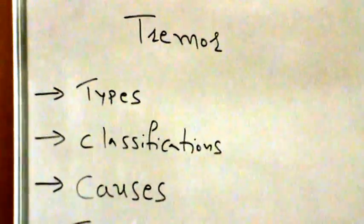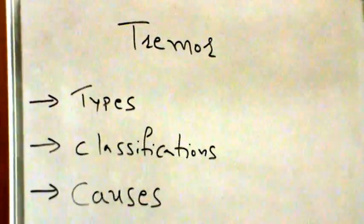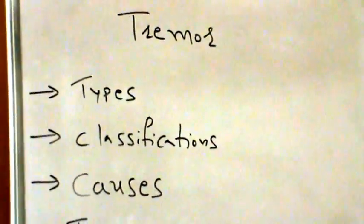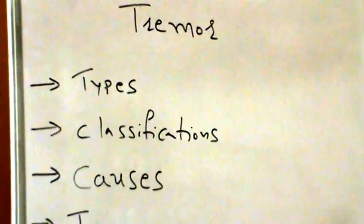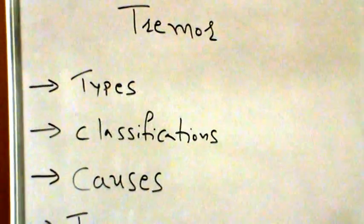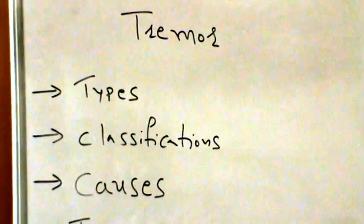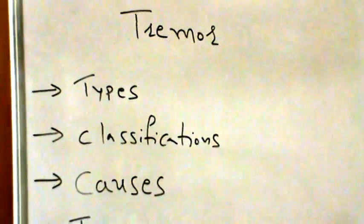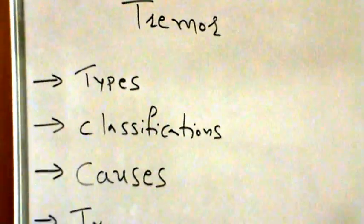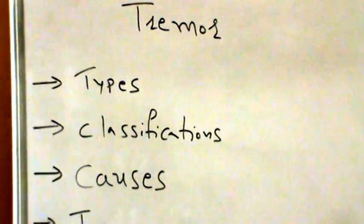What are the types? Tremors are divided into two types: resting and action. Resting tremors occur when you are sitting or lying still. Once you begin to move around, you will notice that the tremor goes away. Resting tremors often affect only the hands or fingers.